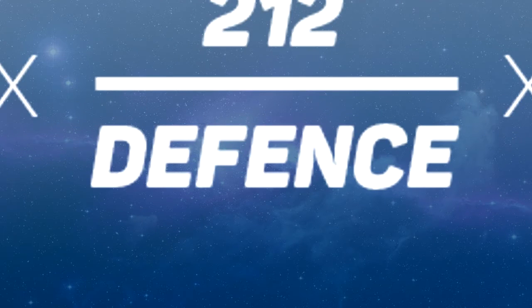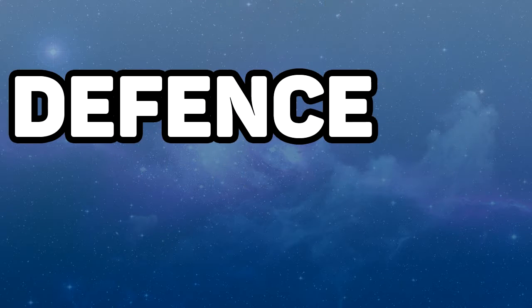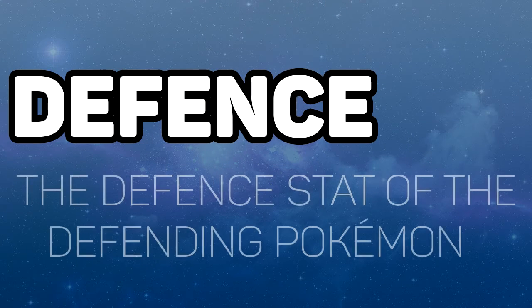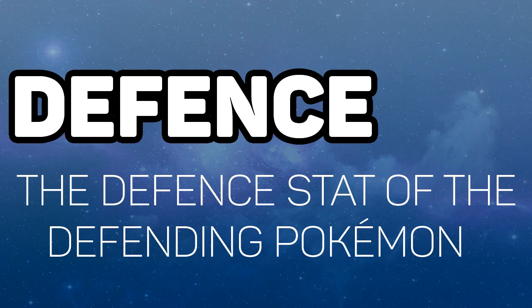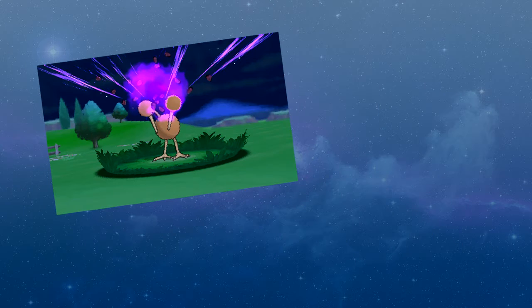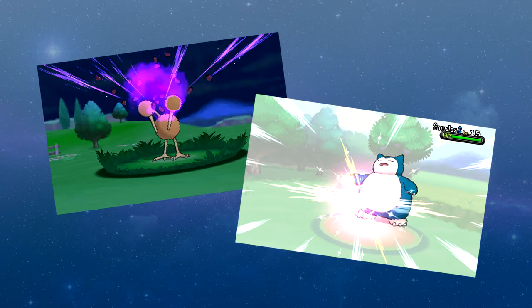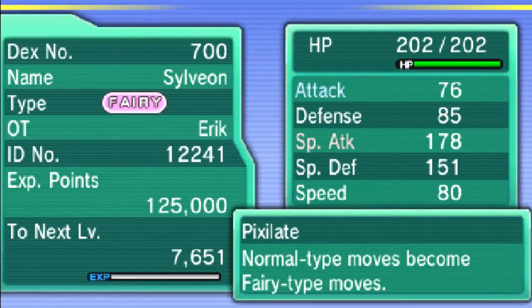Defense is again fairly easy — the defense stat of the defending Pokemon based on which category of move is being used. So for a physical attack, defense; or for a special attack, special defense. And there are a couple of exceptions — this can be changed with moves like Psyshock or Secret Sword, which use special attack and defense. But we're just using Earthquake, nothing complicated in this one. So let's just take Sylveon's defense stat and put that in the calculation as well.